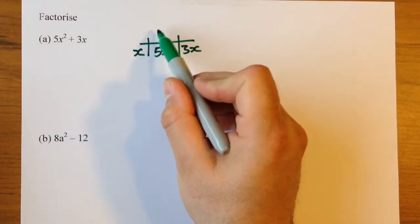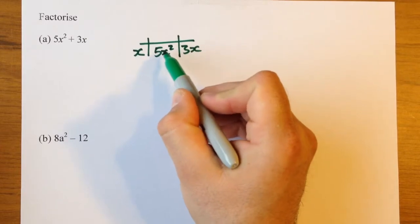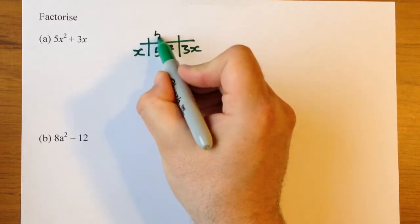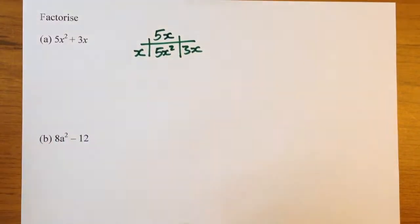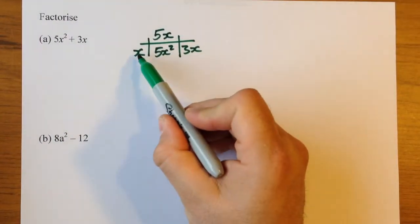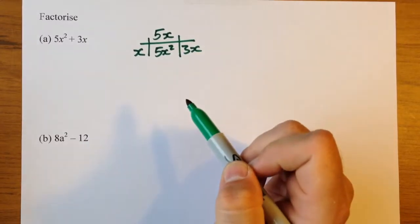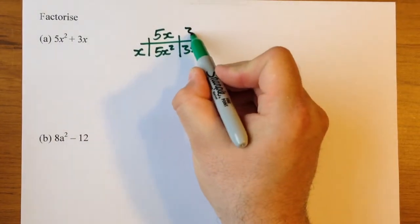Now x multiplied by what gives you 5x squared? Well, first of all we'll need a 5, because there's no 5 there. And we'll need another x to make the x squared. Now x multiplied by what makes 3x? All we need there is a 3.